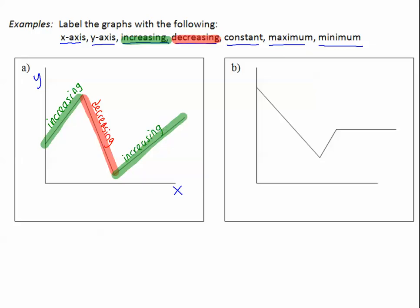Now we look for the maximums and the minimums. Well, wait a minute. Did we skip where the graph was constant? Was the graph ever flat? Nope. Increasing, decreasing, increasing. Never constant.